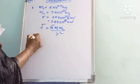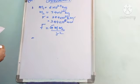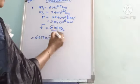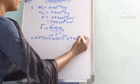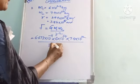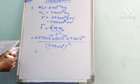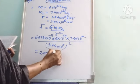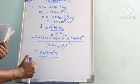Using F = G·m1·m2 / r², we substitute G = 6.673×10⁻¹¹, m1 = 6×10²⁴, m2 = 7.4×10²², and r = 3.84×10⁸ m. By simplifying, we get the force as 2.0×10²⁰ N. That is the force between the Moon and the Earth.